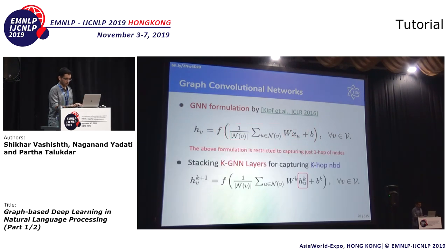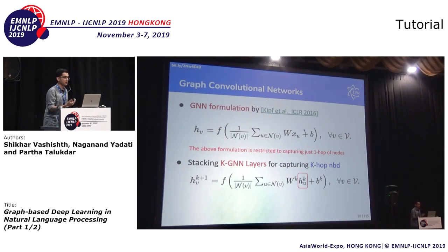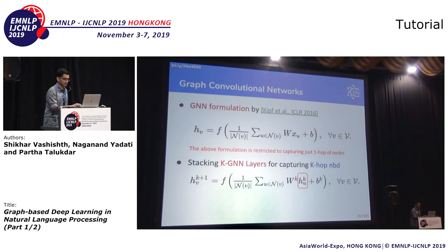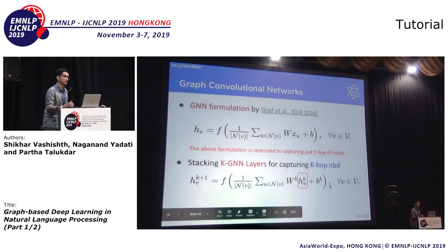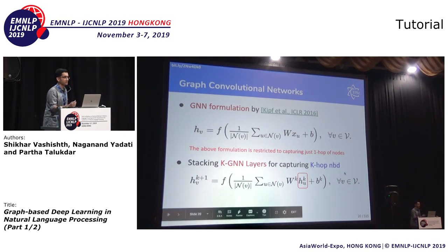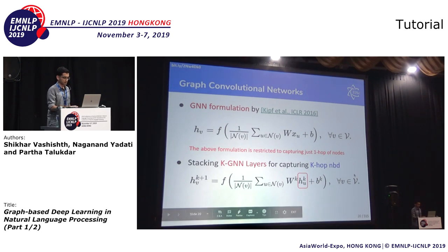This equation captures a one-hop neighborhood for each node in the graph. But in practice, we want nodes to encode a larger k-hop neighborhood. If one is interested in capturing k-hop neighborhood, one can stack k such layers. The output of the first layer becomes the input to the second layer, done k times, and the final embedding is used as the final representation. Using k layers allows capturing k-hop neighborhood.